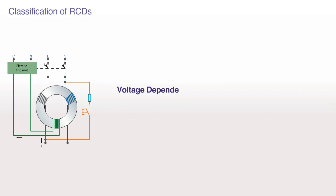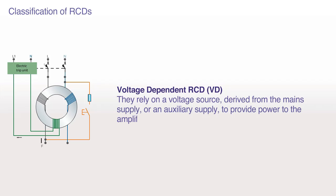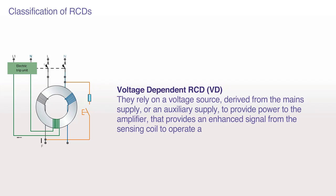Voltage Dependent RCD: They rely on a voltage source derived from the mains supply or an auxiliary supply to provide power to the amplifier that provides an enhanced signal from the sensing coil to operate a trip solenoid or relay.